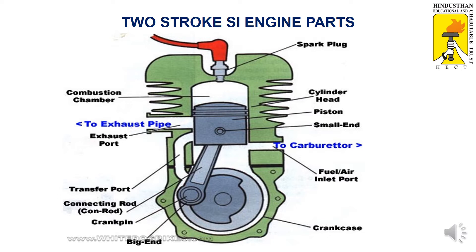Before going to the working principle, let's see the component details in the two-stroke SI engine. There are three kinds of blocks: the first is the head block, the second is the cylinder block, and the third is the crankcase block.